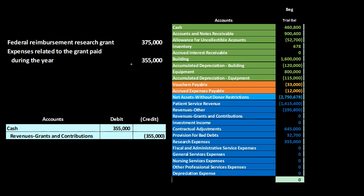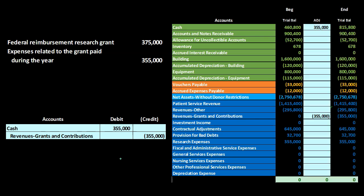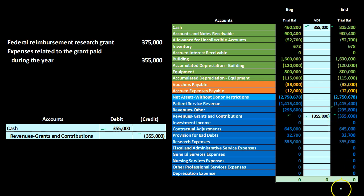Recording the expense transaction, we have a debit to research expenses and a credit to cash, decreasing cash and increasing expenses, which decreases what would be similar to the net income number. Next, for the reimbursement, we get cash only for the $355,000 actually spent — not the full $375,000. So we debit cash $355,000 and credit revenues for grants and contributions $355,000. The grants revenue account increases in the credit direction, increasing the bottom line.